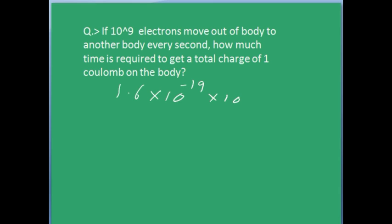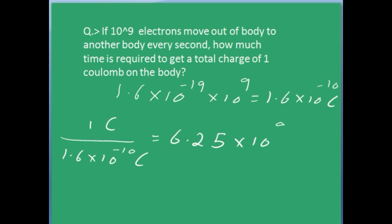So 1.6 × 10^-10 coulombs of charge is accumulated on the body in a second. To find the time, divide 1 coulomb by the charge accumulated in a second. This gives 6.25 × 10^9 seconds, which is approximately equal to 198 years. Don't get scared by this big number, because for all practical applications, the rate of charge transfer is far greater than 10^9, so it happens very fast actually.